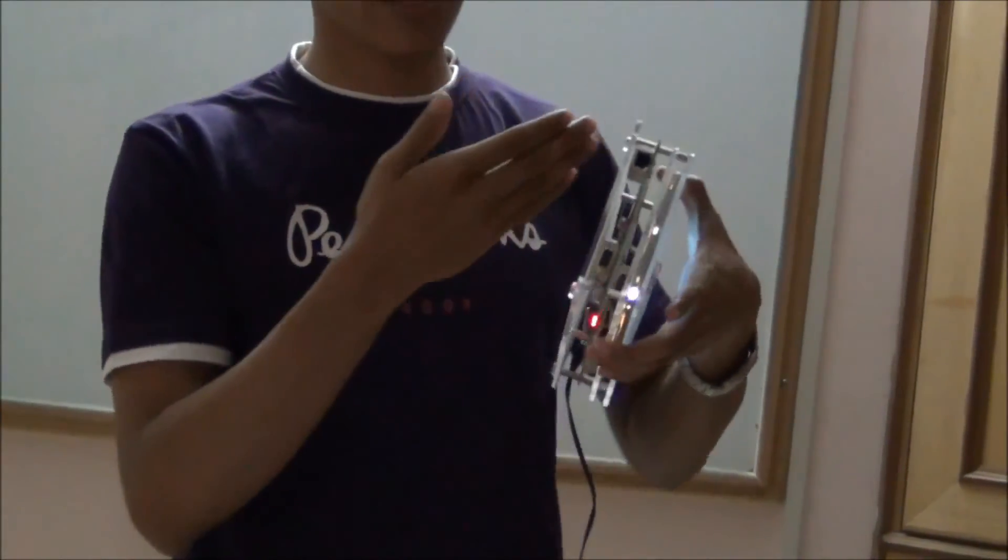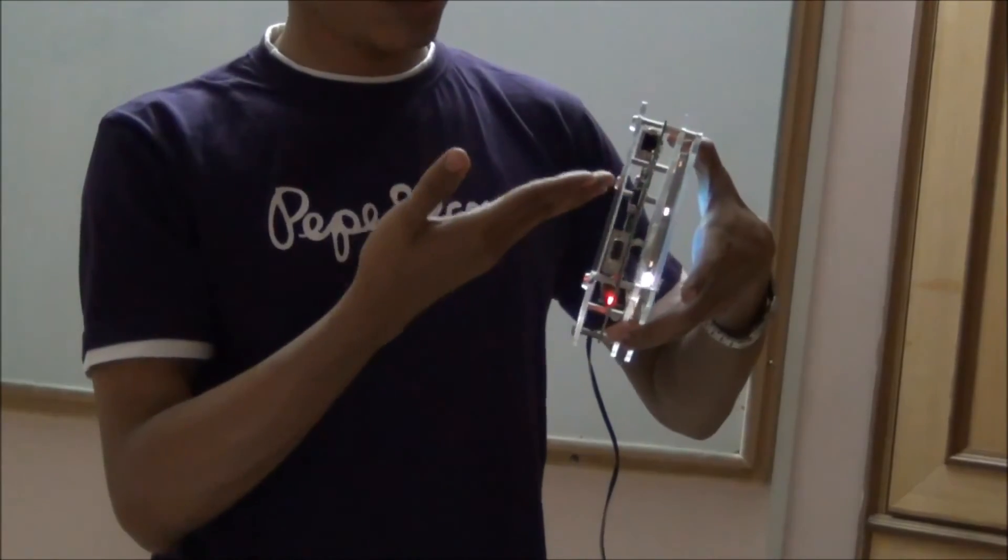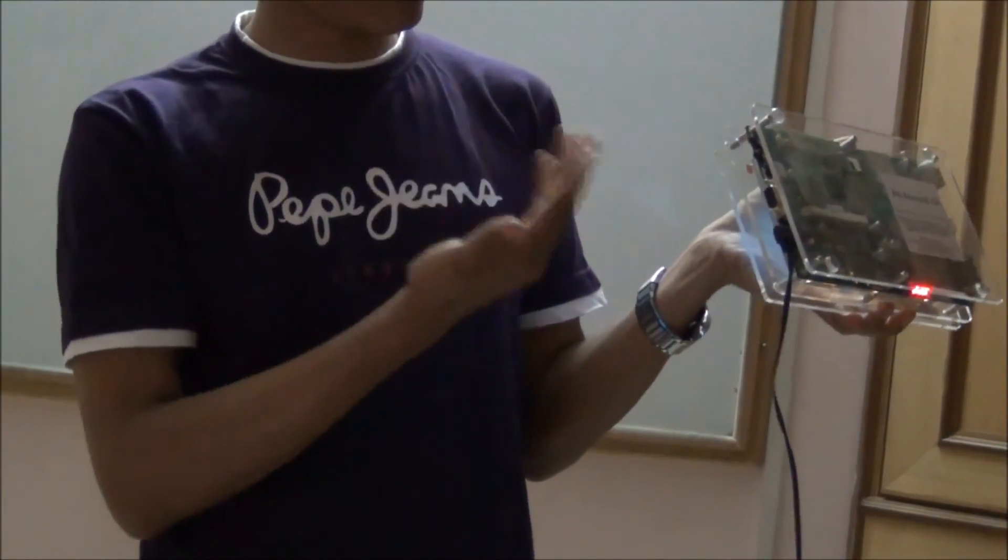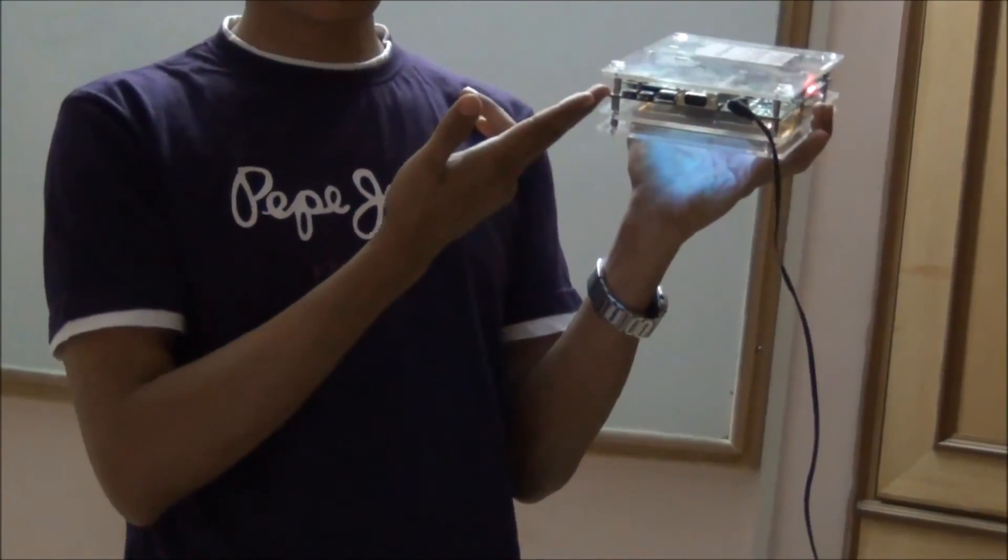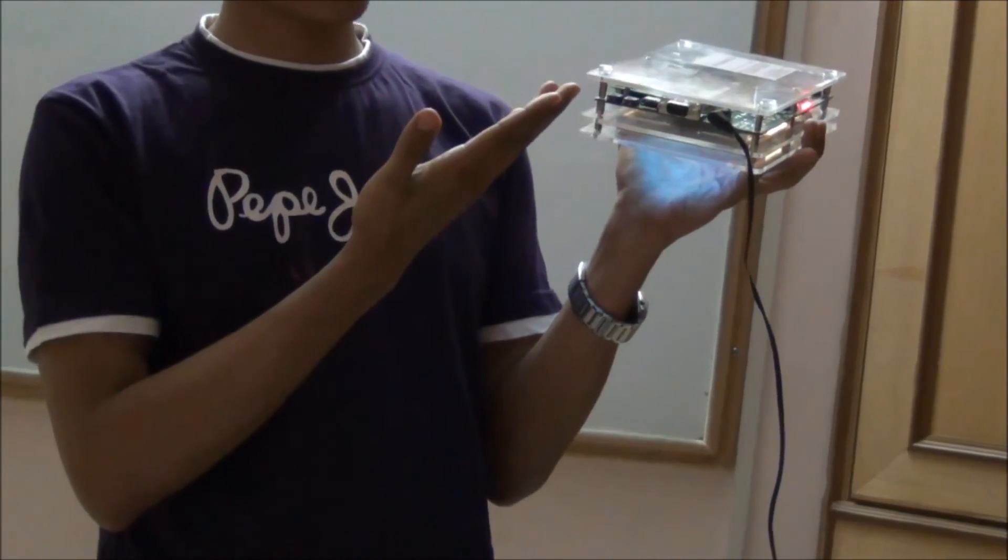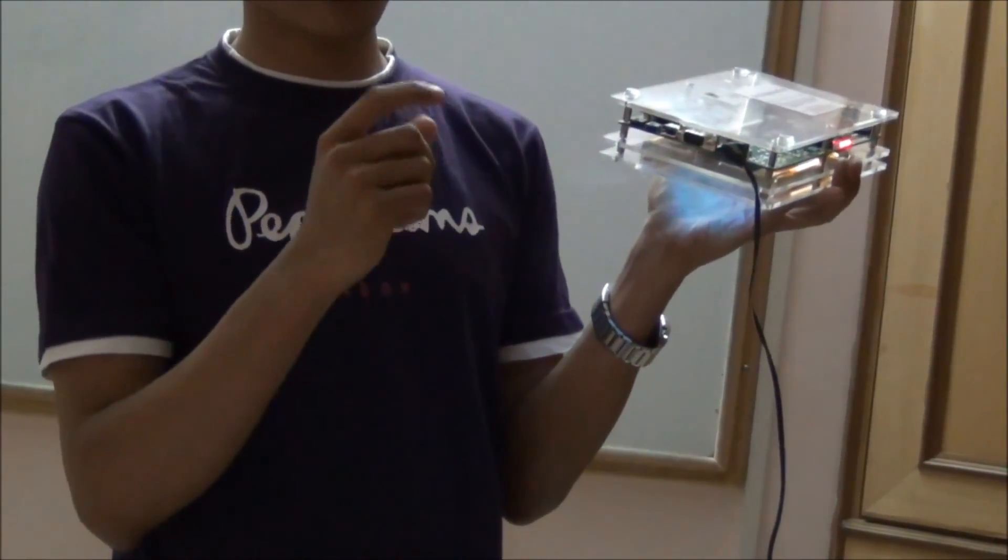In Windows Embedded Compact 7 also, we are supporting all the features like Ethernet and USB and VGA out and serial port, audio in and audio out. This audio can be used for speakers and any kind of audio purposes.